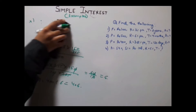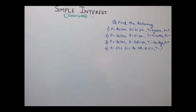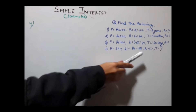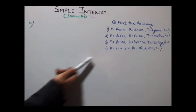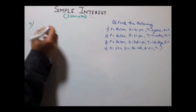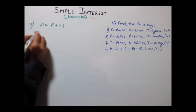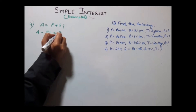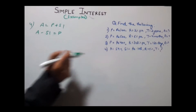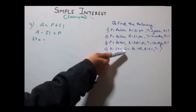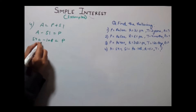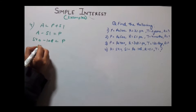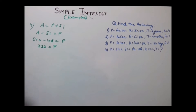Now let's do the fourth part. Here the amount is given, simple interest is given, the rate is given, and we need to calculate the time. To find time we first need the principal, which can be found since amount equals principal plus simple interest, so principal equals amount minus simple interest. Amount is 540, minus simple interest which is 108, giving us the principal as 432.